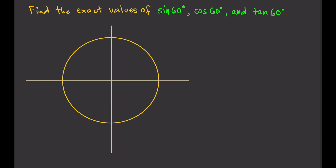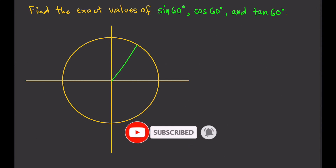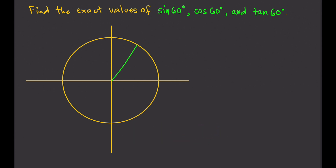All we need to do is locate the angle 60 degrees in the unit circle. So that angle — this is 60 degrees. Remember that the exact values for sine, cosine, and tangent can be determined by the coordinates of this point right here. Namely, sine 60 is the y-coordinate, cosine 60 is the x-coordinate, and tangent 60 degrees is y over x.